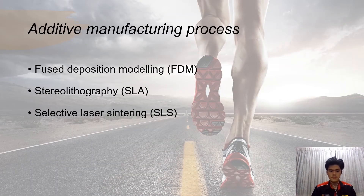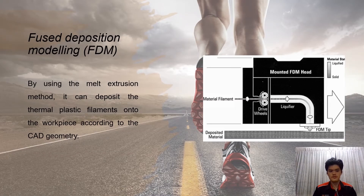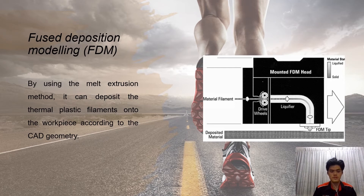There are different types of additive manufacturing processes, for example Fused Deposition Modeling, Stereolithography, and Selective Laser Sintering. For Fused Deposition Modeling, it will use the melt extrusion method so that it can deposit the thermoplastic filaments onto the workpiece according to the CAD geometry.